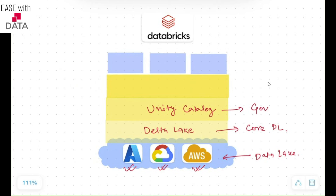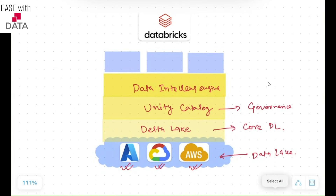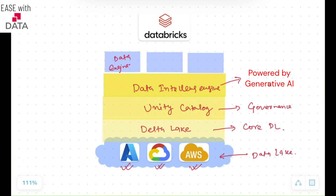On top of this, Databricks has built something called the Data Intelligence Engine. The benefit of the Data Intelligence Engine is that it is governed by Unity Catalog, and you can get insights of your data with the power of Data Lakehouse on top of your data lake. This is why Databricks is now called a data intelligence platform. On top of all this, you have all three personas and their tools — Data Engineering, Data Analyst, and Data Scientist.